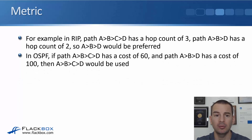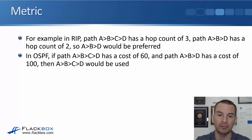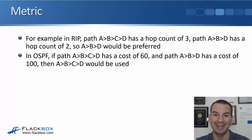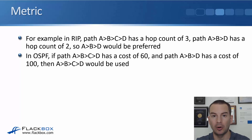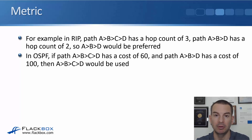For example, let's say we're using RIP as our routing protocol and we want to get to a particular destination, and we've got two different paths. The first path goes from router A to B to C to D, which would be a hop count of three. Another path is A to B to D, which would have a hop count of two. RIP uses hop count as its metric, so it's going to put the shortest hop count into the routing table.